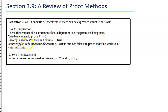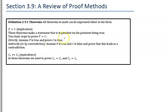The first way is directly: assume the premises are true and prove the conclusions are true. The other way is indirectly, or by contradiction: assume P is true and the conclusion is false, add the negation of the conclusion to the premises, and prove that leads to a contradiction. We've seen these direct and indirect proofs when doing formal proofs a few sections ago.